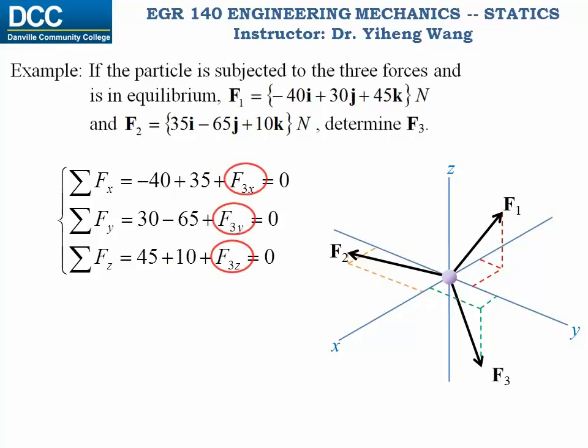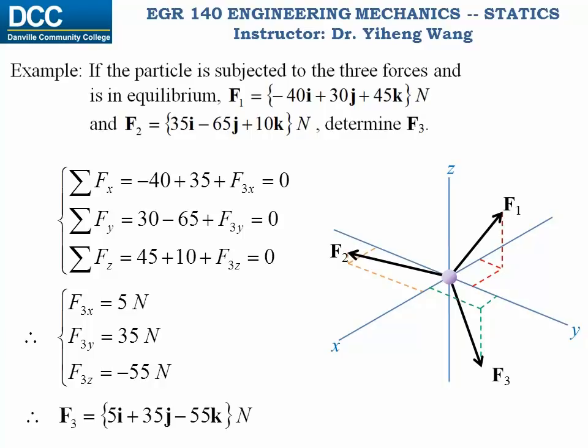The unknown parameters are the x, y, and z components of force F3. But since we have three equations, we can solve for all three unknowns. And eventually, we can express F3 in its Cartesian vector form as well. Of course, this is a very straightforward example, and in many of the practice problems, there could be other kinds of unknowns, but the problem-solving method will be similar.